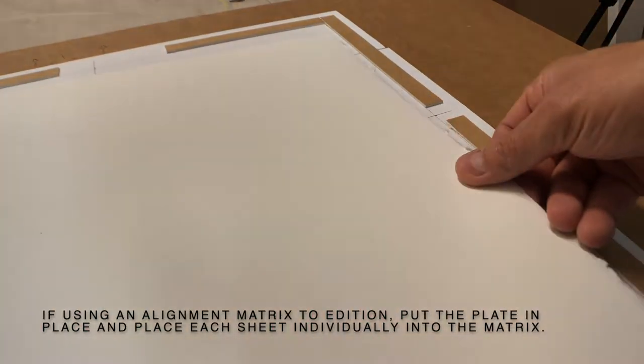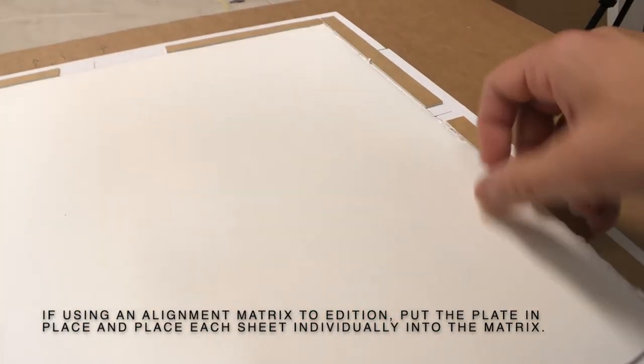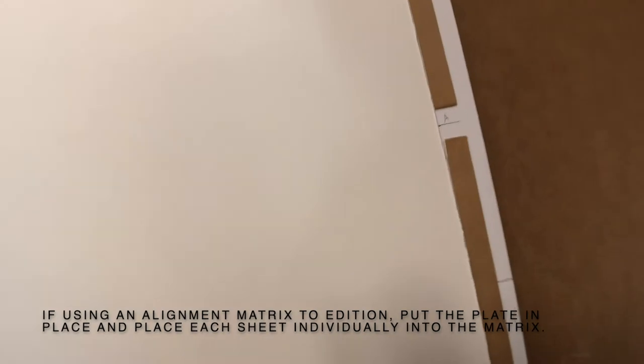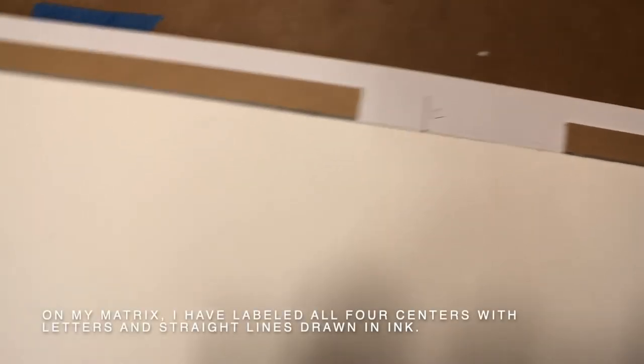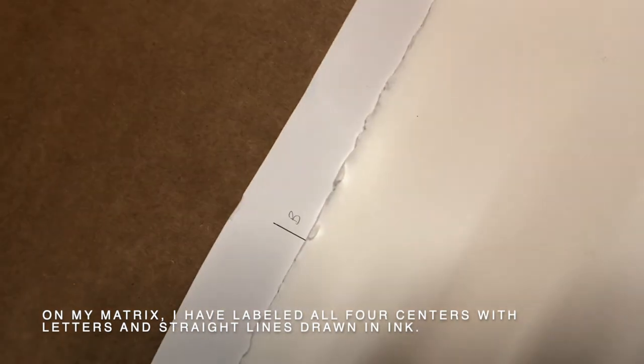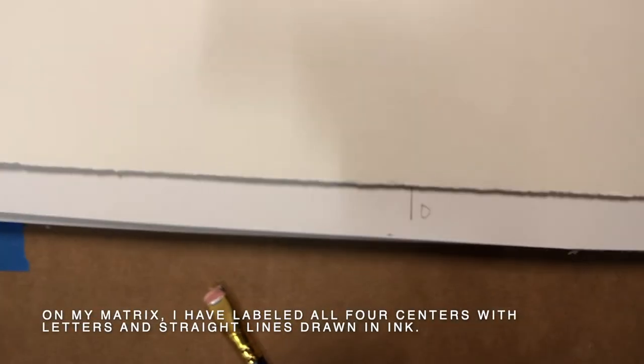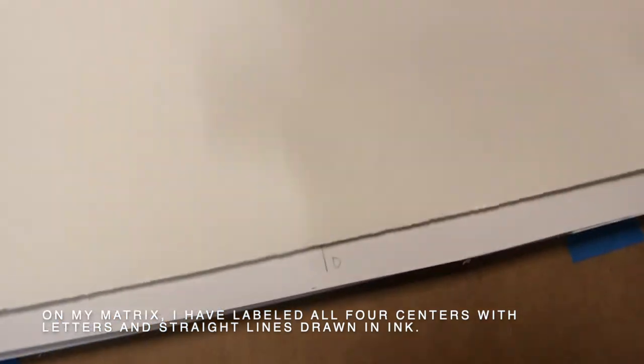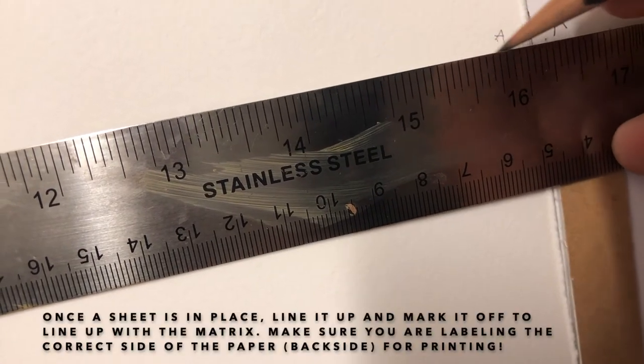I've made a matrix for this linocut that I'm going to do as a demo. You can see it has these little edges where the paper bumps up next to the board. I've cut those out of illustration board, and then I've marked off all four sections with straight lines that I've drawn in ink and with letters.